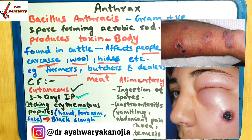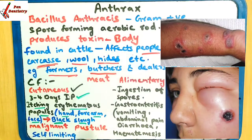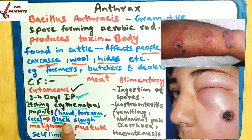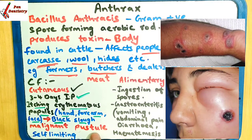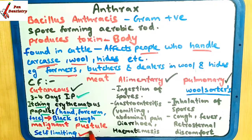Itching hogi, erythema, papules banengi - kahan kahan pe: hands mein, forearm mein, aur face mein. Jab papules further apna ek black discharge release karenge, black sludge release karenge, toh area ko hum bolenge malignant pustule. Jab aapka black sludge release hoga aur malignant pustule mein kya hoga? Lesion ke around vesicles form ho jayenge, toh us time pe hum bolenge malignant pustule formation hui hai. Majority of the cases mein yeh disease self-limiting hoti hai. Self-limiting means disease hai, woh aapki khud-ba-khud treat ho jayegi without your treatment.